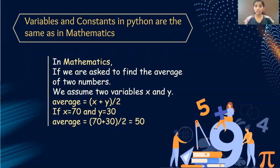Variables and constants in Python are same as mathematics. Now if I'm asking you what is average of variable x and y, the average is equal to x plus y divided by 2. And now if I'm giving a value 70 to the variable x and 30 to the variable y, the answer will be 70 plus 30 which is 100, 100 divided by 2 is 50. So 50 will be the average of these two numbers.